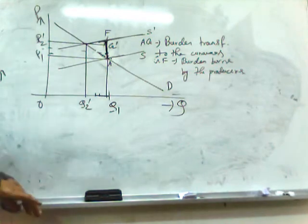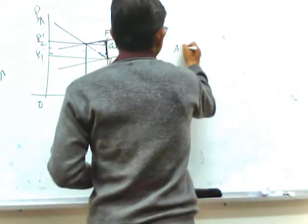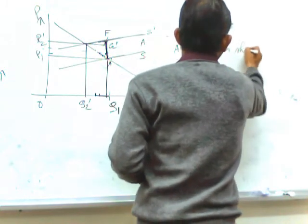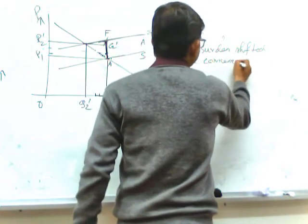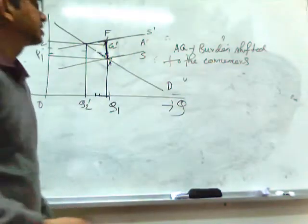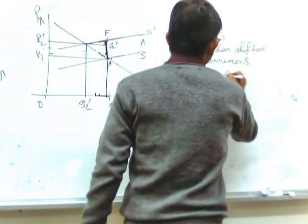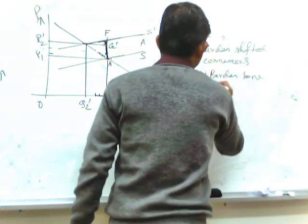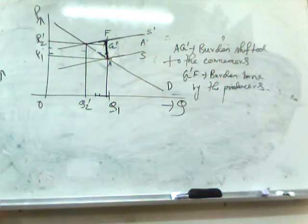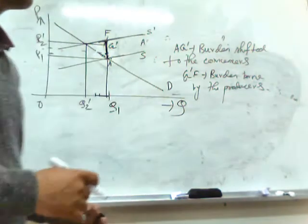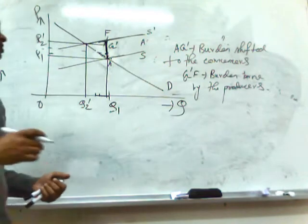AF is the burden of taxation, out of which AG-dash is transferred towards the consumers in the form of increased price. AG-dash is the burden shifted to consumers in the form of higher price, and G-dash-F is the burden borne by the producers. Price elasticity of supply is high, so the producer is able to transfer the major share of burden towards consumers, and producers bear a smaller part.